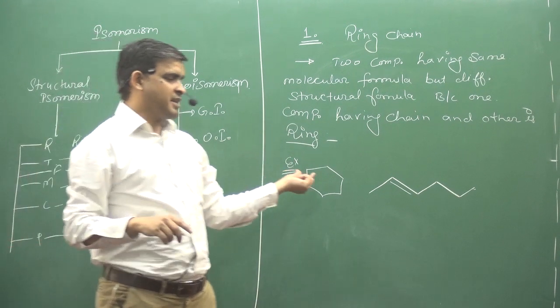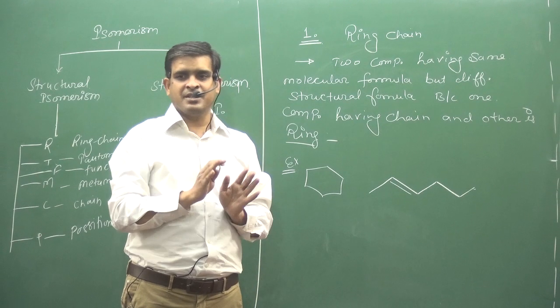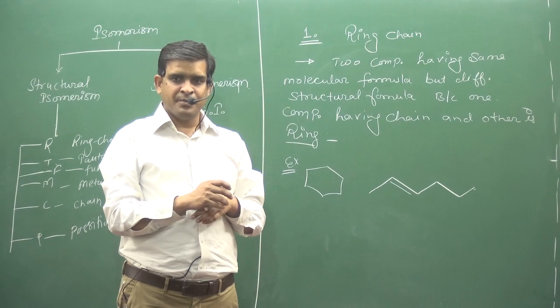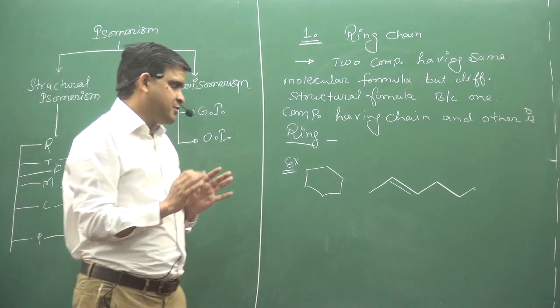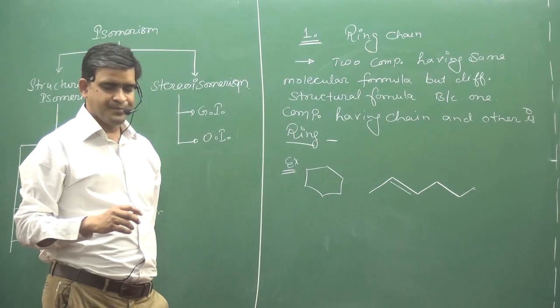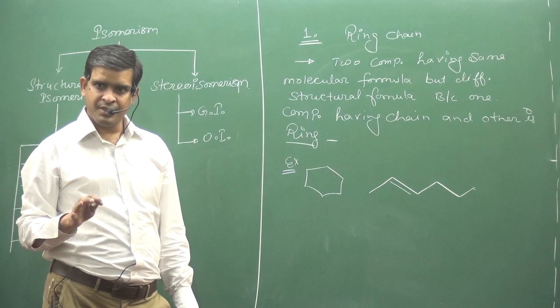I have not counted hydrogen because D.O.U. - Degree of Unsaturation - equals number of pi bonds plus number of cycles. That is very true.